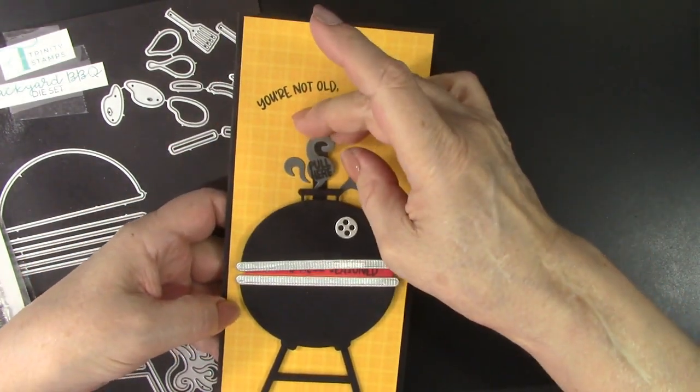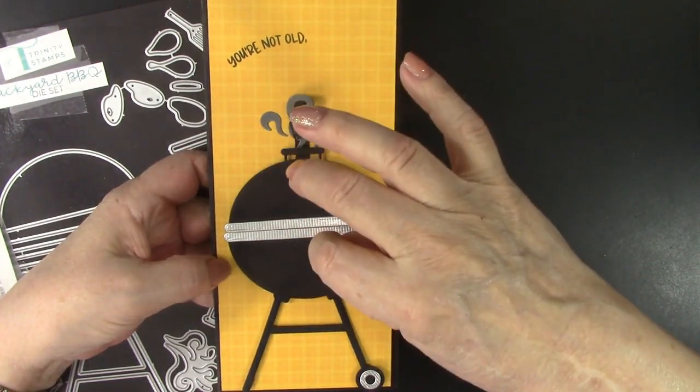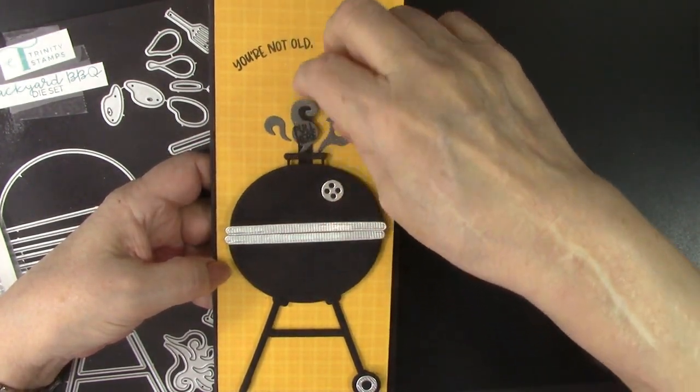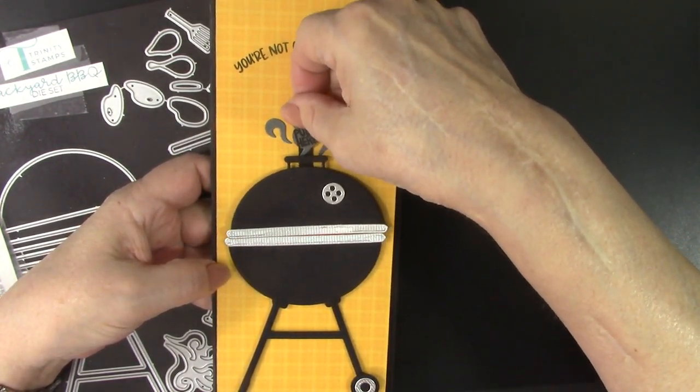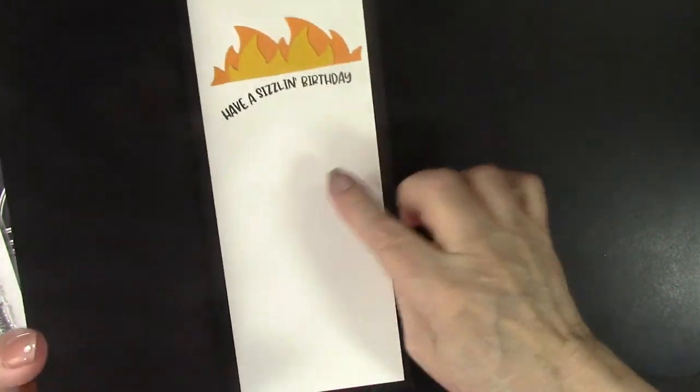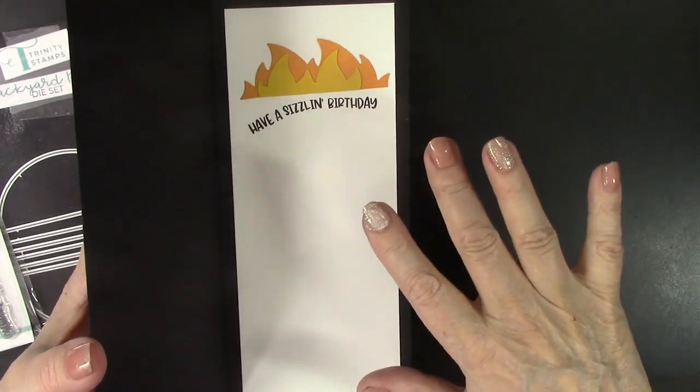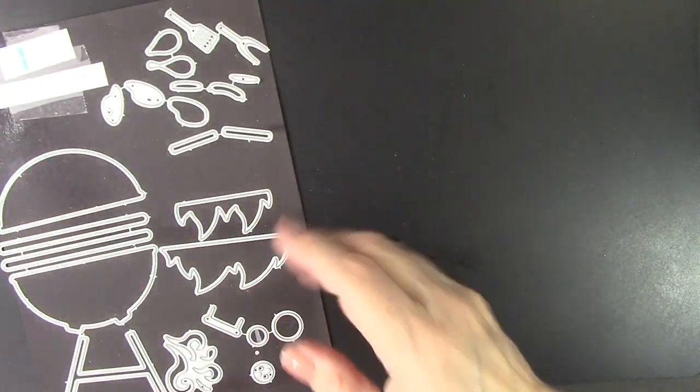You're well seasoned. Isn't that cute? I didn't have the dies from Trinity Stamps to do that slit in the back, but basically I just cut a slit and attached it and then was able to make a pull here for this. And then on the inside I put Have a Sizzlin' Birthday with some more flames from the die set. So another really cool card that was easy to make.